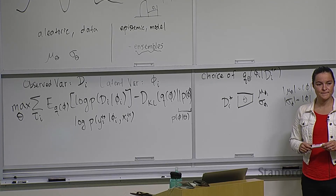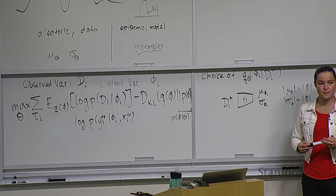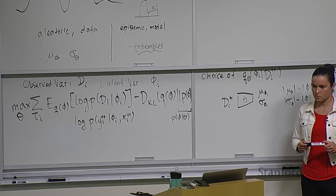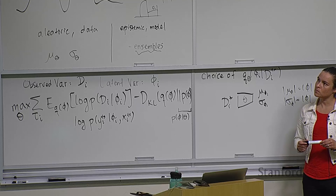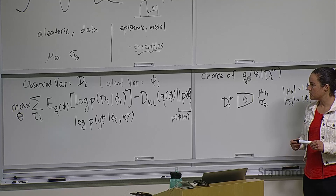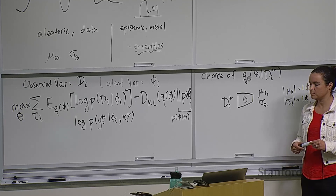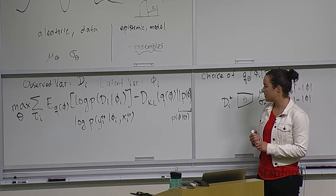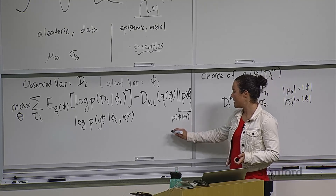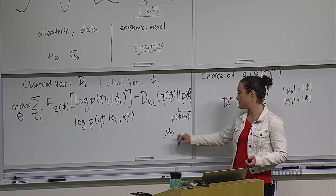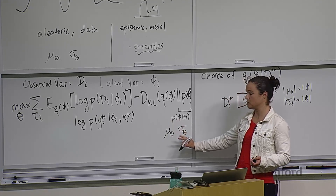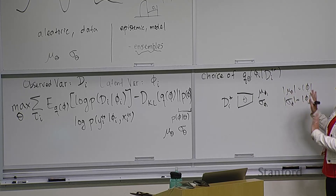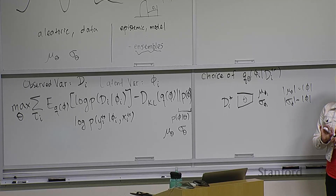Student question: can we choose the prior over phi as just P(theta)? In something like MAML, we initialize parameters with theta, and theta serves like a prior that you update based on training examples. It intuitively makes sense to think of theta as a prior for phi. Response: yes, in MAML it definitely intuitively makes sense to think of the initial parameters as a prior — we'll cover that in a couple of slides. There's actually a way to formalize that intuition, which is pretty cool.